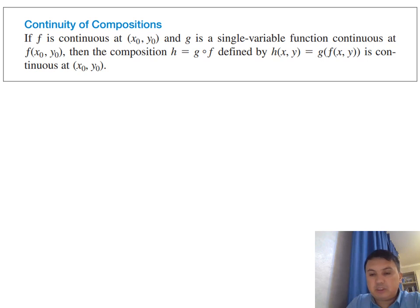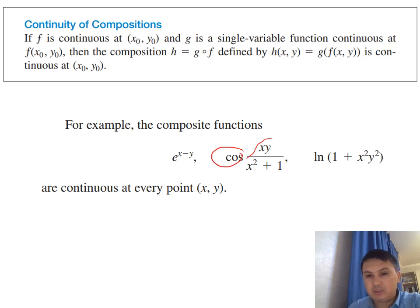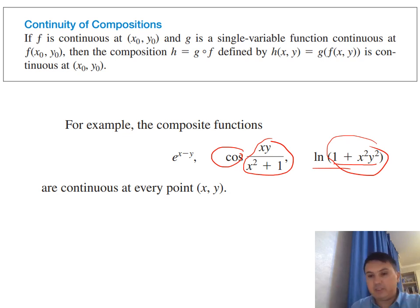A final note: if you have two continuous functions, their composition is also continuous, just as in the one-dimensional case. For example, x − y is continuous and eˣ is continuous, so e^(x−y) is continuous. Similarly, cosine is continuous and xy/(x²+1) is continuous, so their composition is continuous. Also, 1 + x²y² is continuous, and ln(x) is continuous for x > 0, so ln(1 + x²y²) is continuous since 1 + x²y² > 0 always.